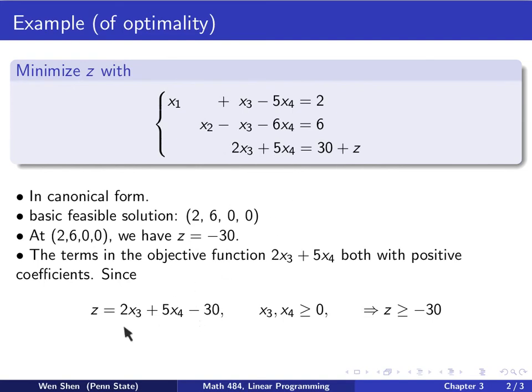Let's rewrite this. Moving 30 to the other side, we have z equal to this. We know that x3, x4 are restricted, so they're greater than or equal to 0. Based on that, we can conclude that z shall be greater than or equal to negative 30. It cannot be smaller, because otherwise this would not make sense.